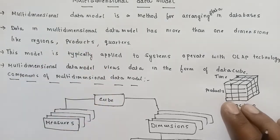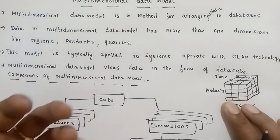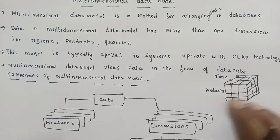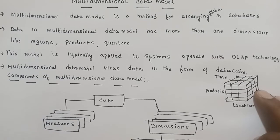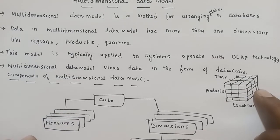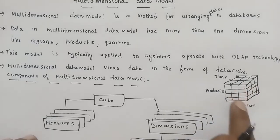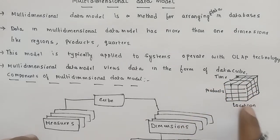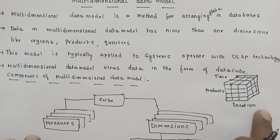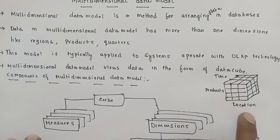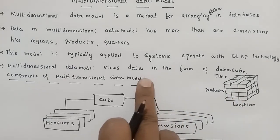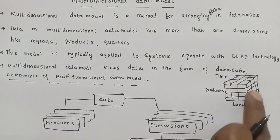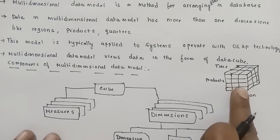Multi-dimensional data models use data in the form of a data cube. Data cubes can have two or more dimensions. They are used to represent and view multi-dimensional data. For example, a data cube with three dimensions: location, products, and time — used to store sales-related data.